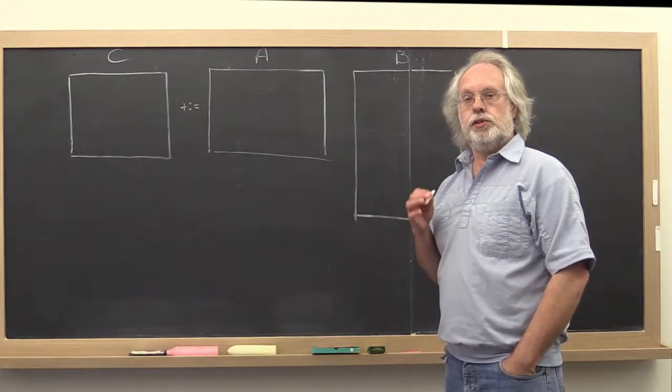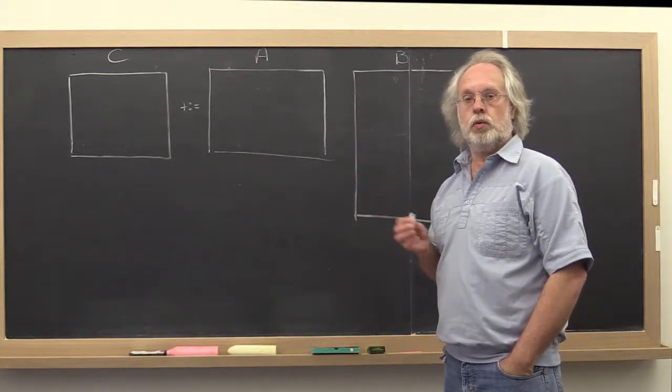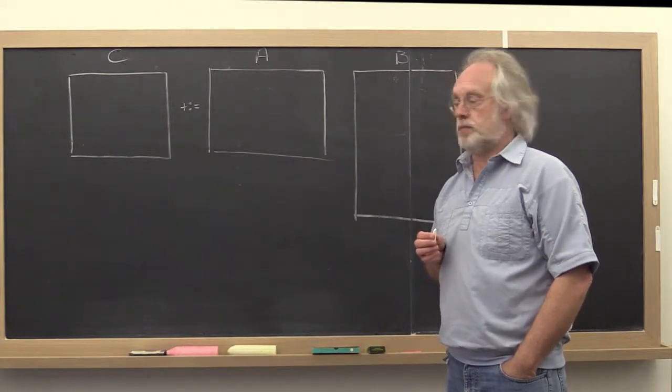What we want to do now is to look at how the dot product would work in the context of a matrix-matrix multiply.